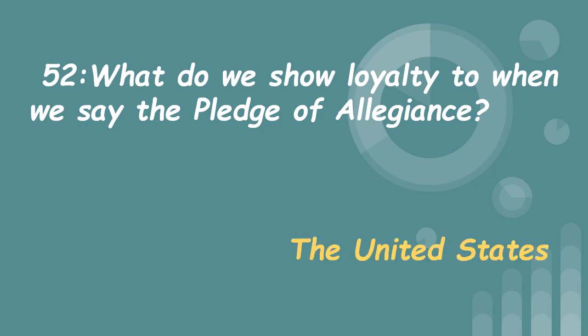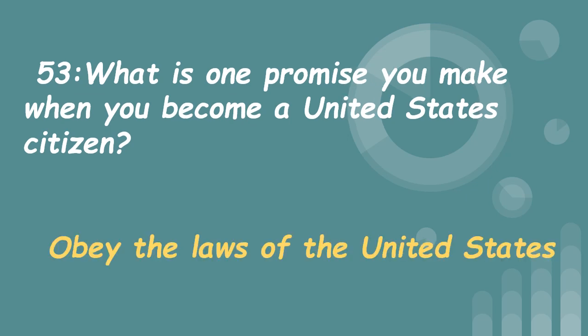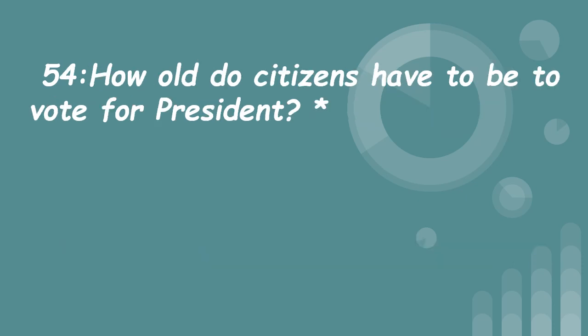53. What is one promise you make when you become a United States citizen? Obey the laws of the United States. 54. How old do citizens have to be to vote for president? 18 and older.